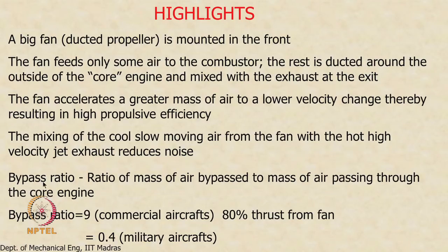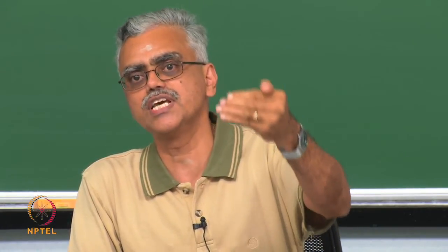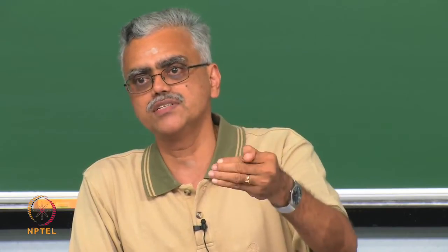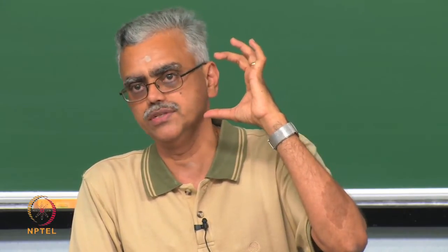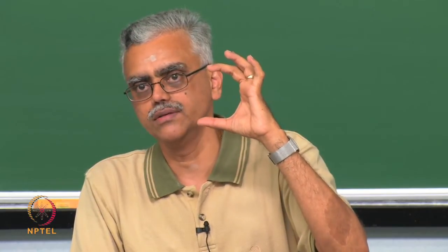Bypass ratio is a metric used to describe a turbofan engine. It is the ratio of air bypassed around the core engine to the air that goes through the core engine. For example, if the engine captures 11 kg/s of air and the bypass ratio is 10, then 1 kg/s goes through the core engine and 10 kg/s goes through the fan nozzle — so 10 kg is ducted outside the core for every 1 kg that passes through it.